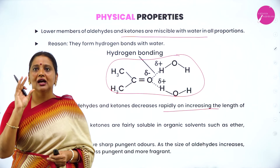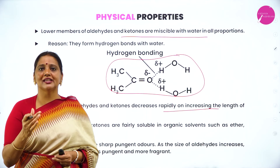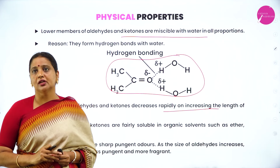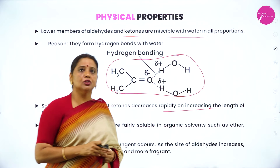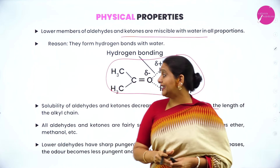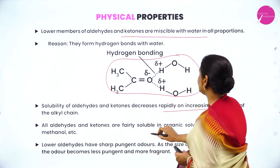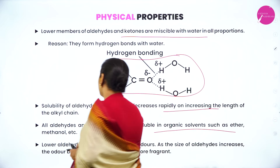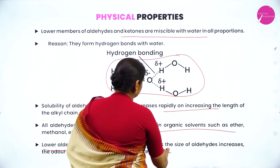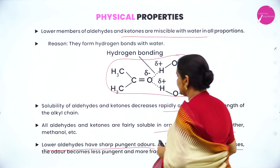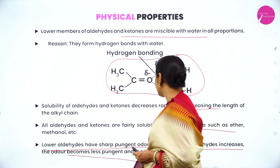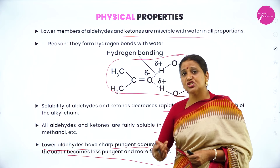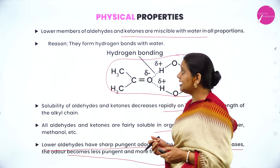Solubility of aldehydes and ketones decreases with increasing length of the alkyl chain, because alkyl groups are hydrophobic in nature — as alkyl group size increases, they repel water and solubility decreases. Aldehydes and ketones are fairly soluble in organic solvents such as ether. Lower aldehydes have a sharp pungent odor; as the size of the aldehyde increases, the odor becomes less pungent and more fragrant, so aldehydes add fragrance to nature.